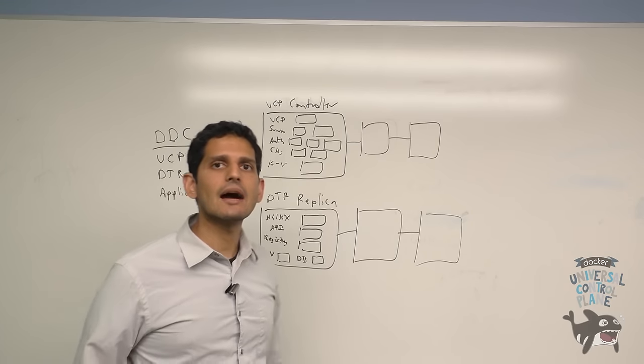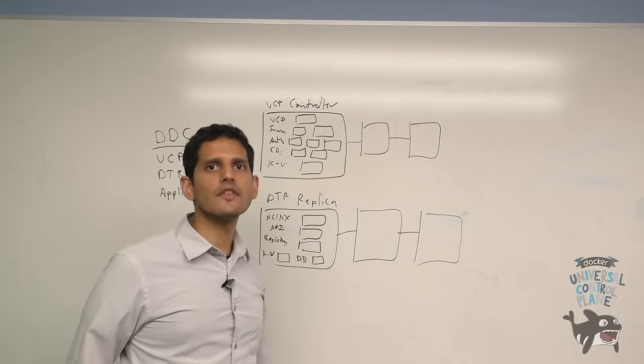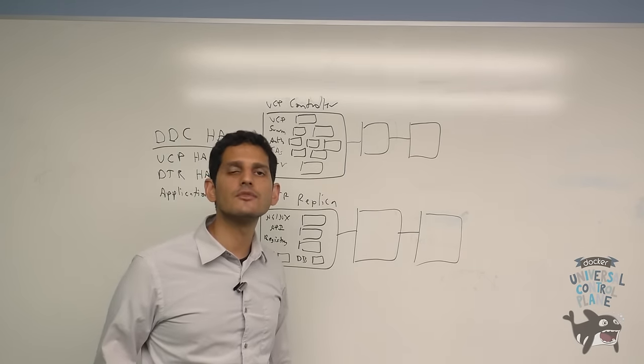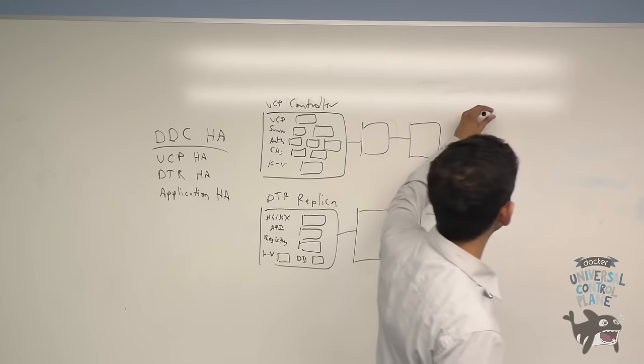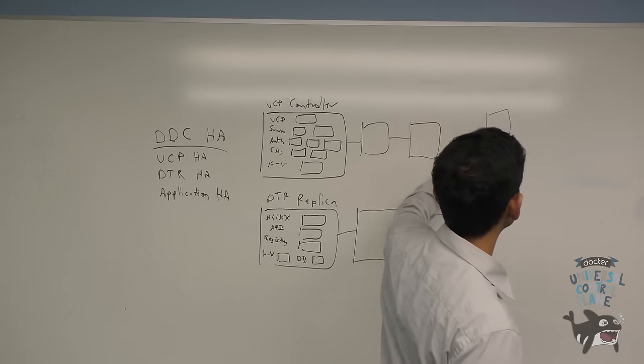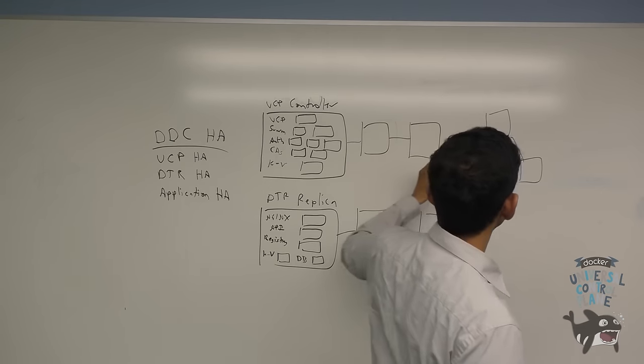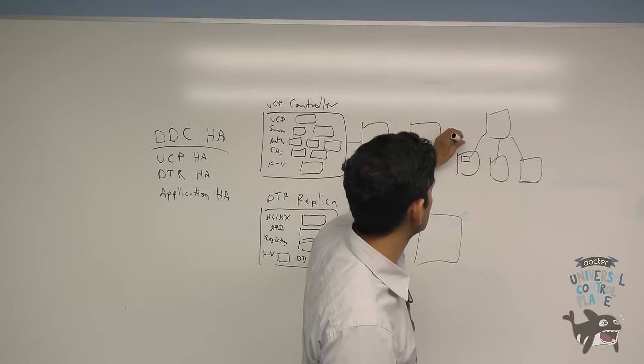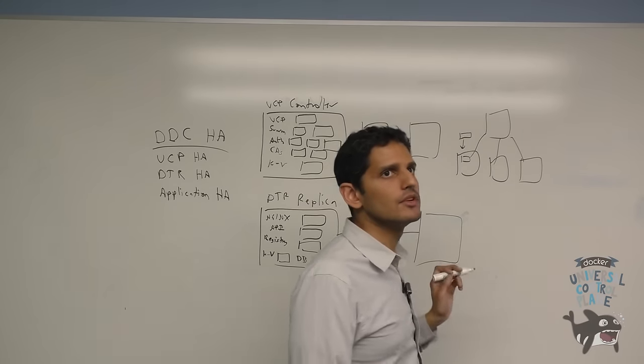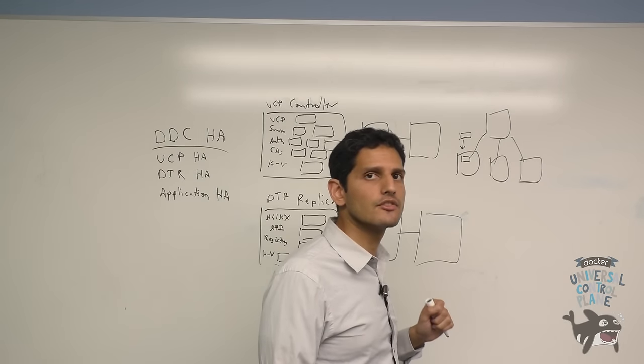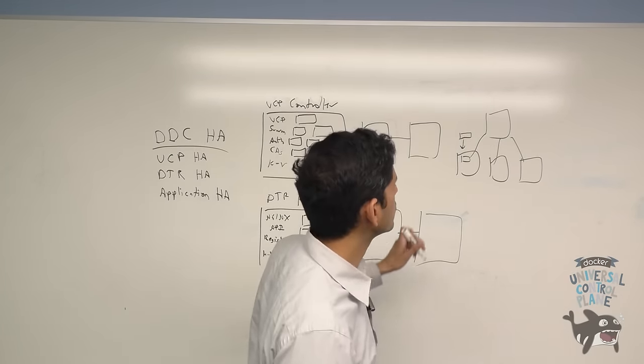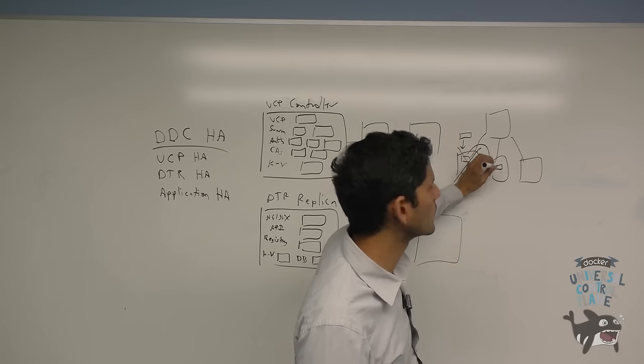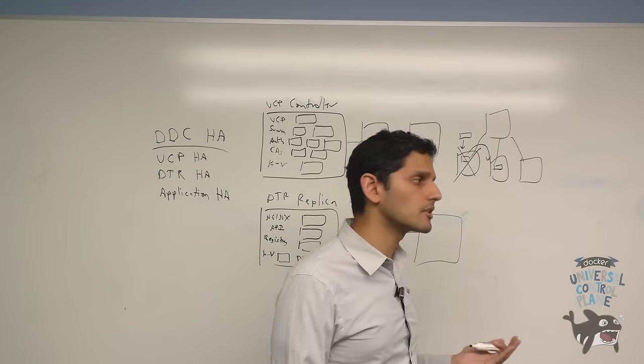The final thing we're going to talk about today is application HA. How do you ensure that your application stays alive in case of a failure on one of the nodes? This can be accomplished through the use of Swarm's container rescheduling feature. So let's say you have a simple deployment consisting of a UCP controller and three nodes. When you run a container that's scheduled against one of these nodes, you can add a label or an environment variable that allows you to enable the on-node failure container rescheduling policy. This ensures that if this node fails for whatever reason, Swarm will automatically reschedule the container onto one of the other nodes, thus ensuring that your application stays alive.